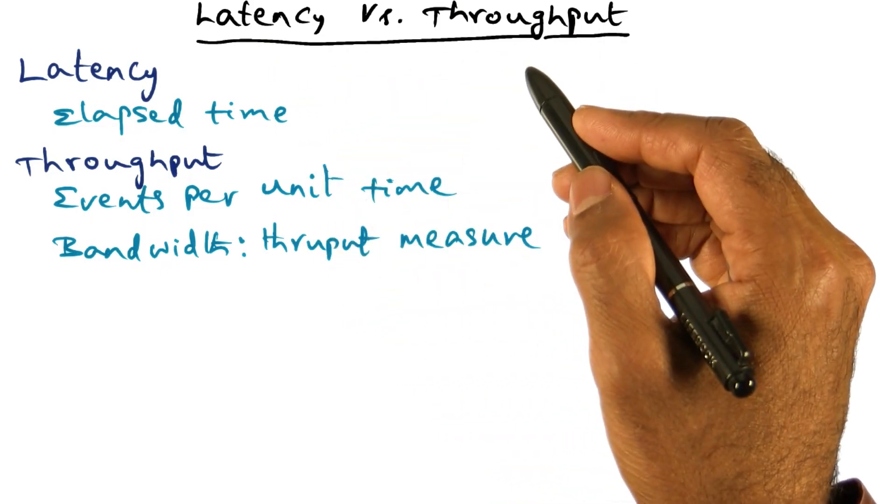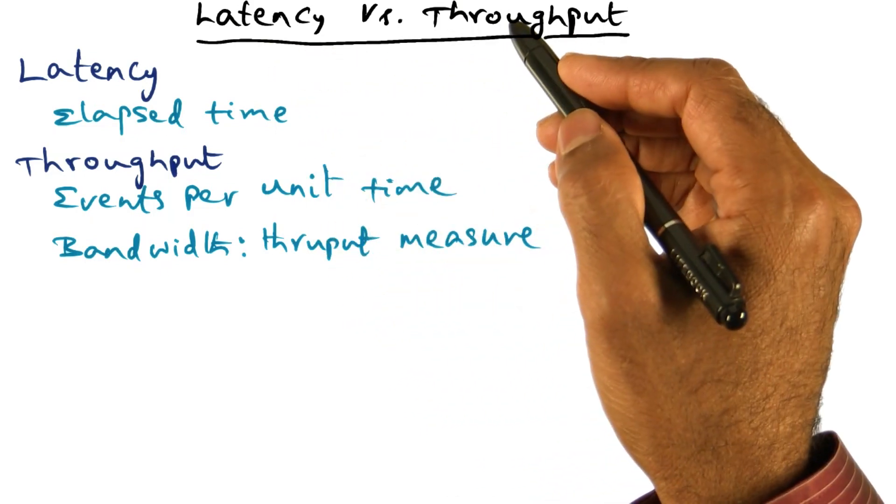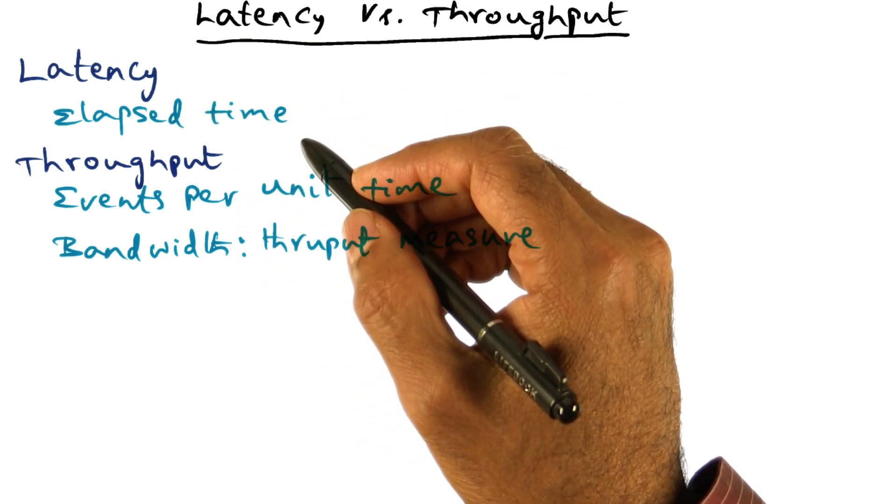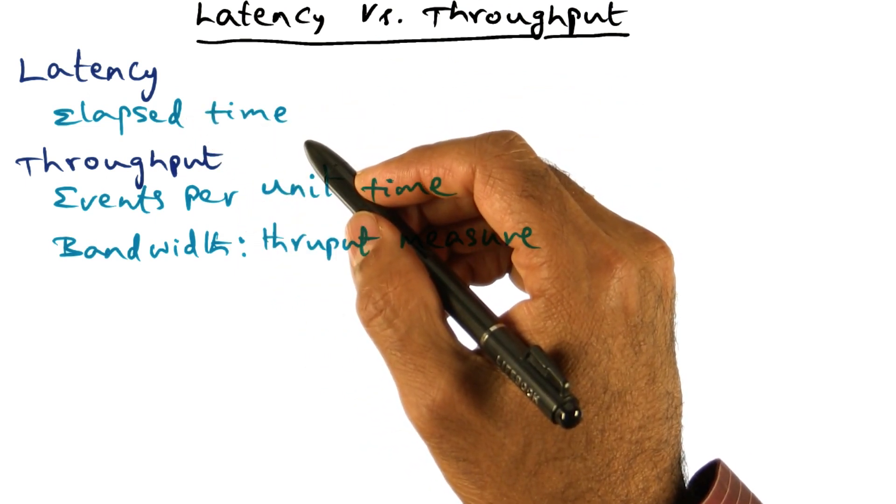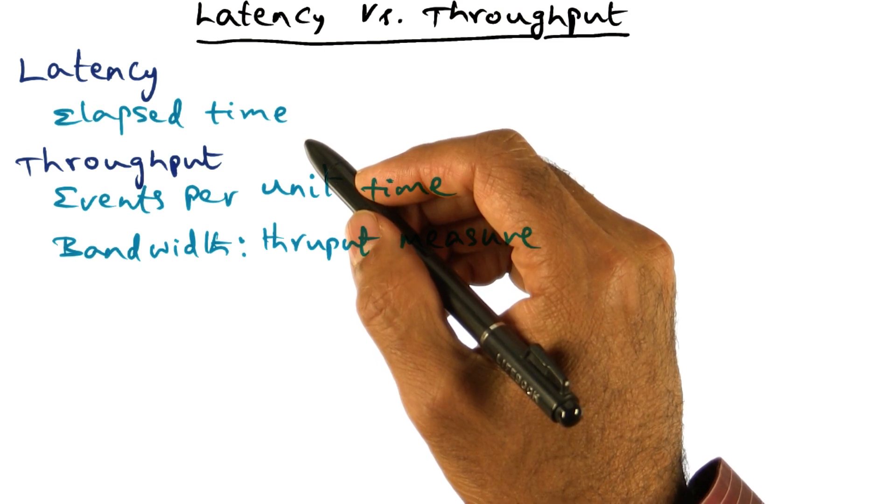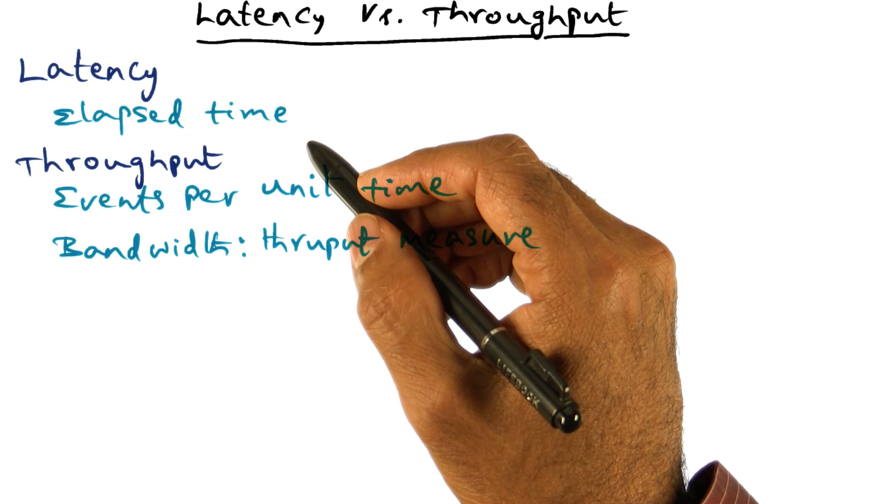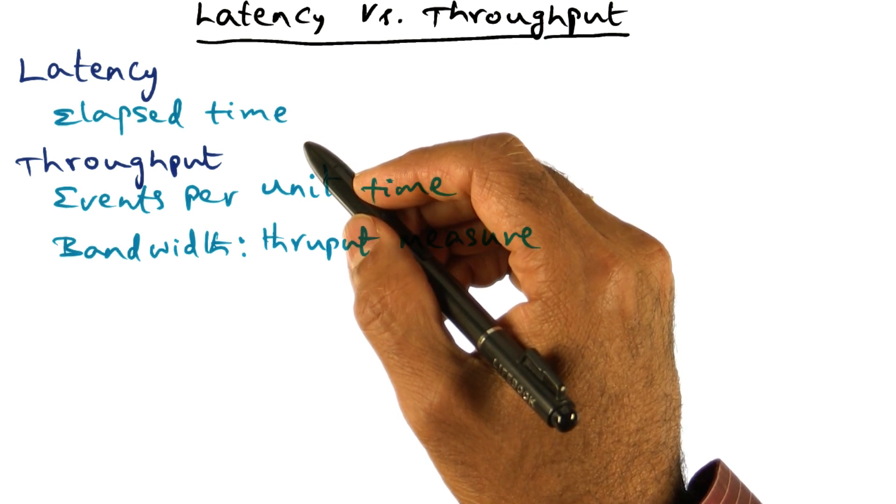It's important to understand these two concepts of latency and throughput. Latency is the elapsed time for an event. If it takes me one minute to walk from my office to the classroom, that's the latency I'm going to experience for that event of walking from my office to the classroom. That's the elapsed time.